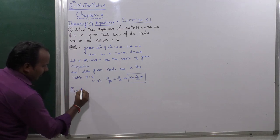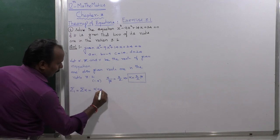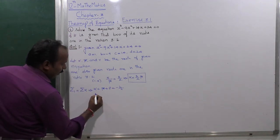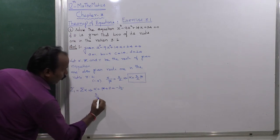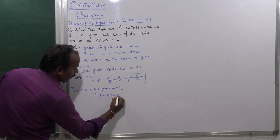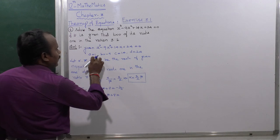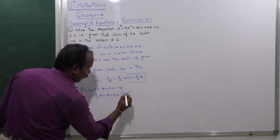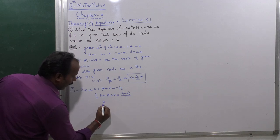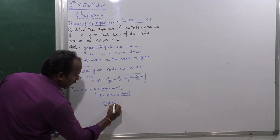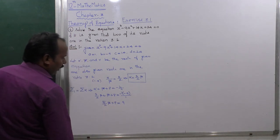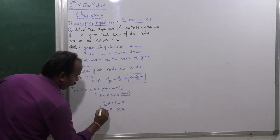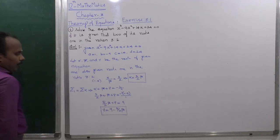For summation 1: α + β + γ = -b/a. Replacing α with (3/2)β: (3/2)β + β + γ = -(-9)/1 = 9. So (5/2)β + γ = 9, which gives γ = 9 - (5/2)β.